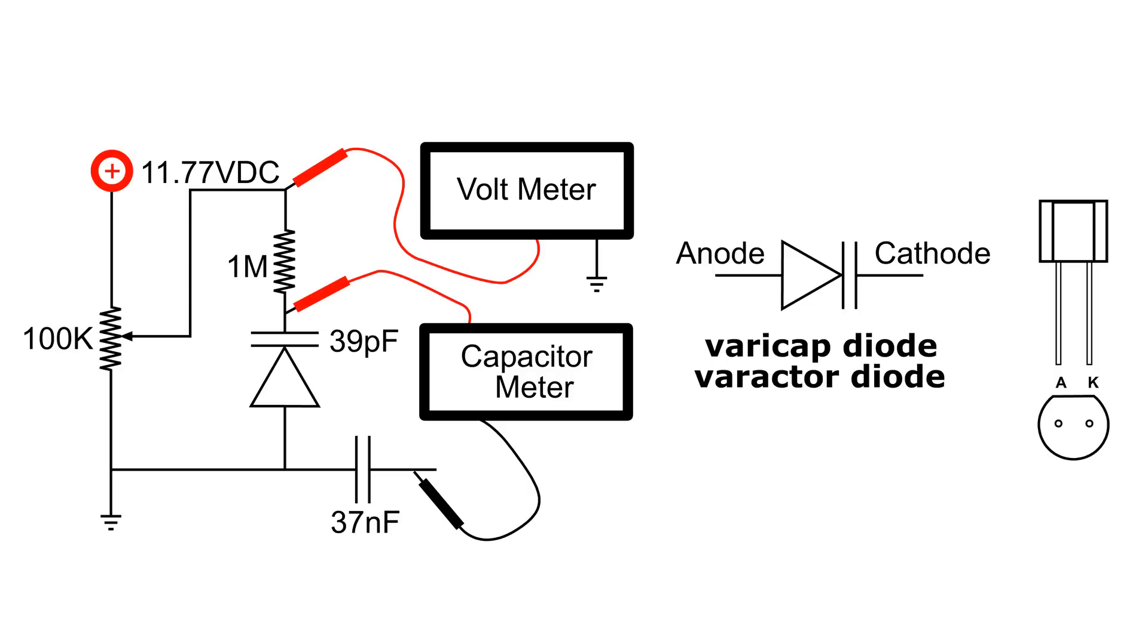We're going to see what happens to the capacitance when I apply positive voltage to the cathode. Notice that that is reverse bias on this varactor diode.